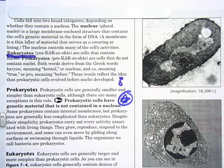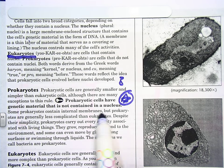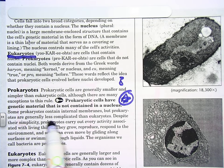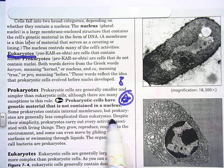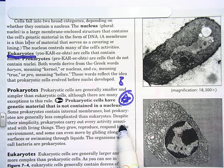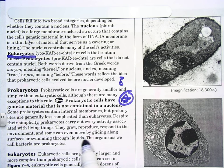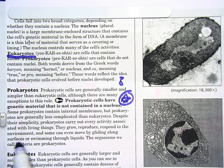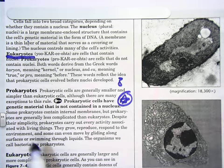What kind of cell contains genetic material in a nucleus? A eukaryotic cell does. Some prokaryotes contain internal membranes, but prokaryotes are generally less complicated than eukaryotes. Despite their simplicity, prokaryotes carry out every activity associated with living things — they grow, reproduce, respond to the environment, and some can even move by gliding along the surface or swimming through liquids. The organisms we call bacteria are prokaryotes.